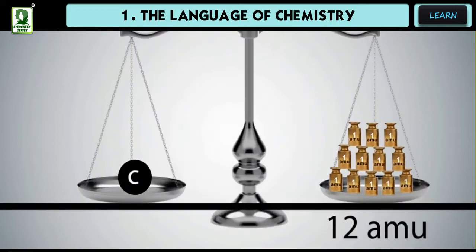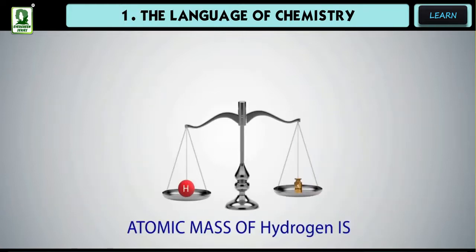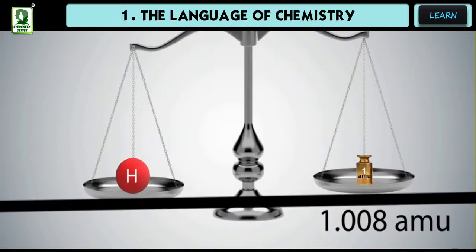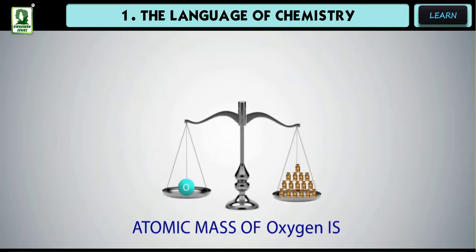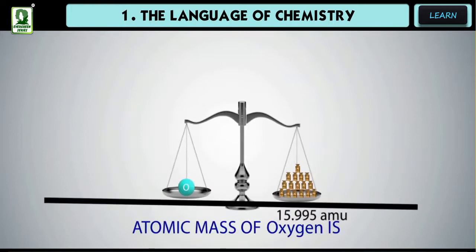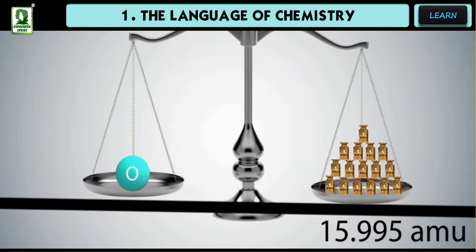Relative atomic mass or atomic mass of an element is the number of times one atom of an element is heavier than one twelfth of the mass of an atom of carbon 12. For example, atomic mass of hydrogen is 1.008 amu and atomic mass of oxygen is 15.995 amu.